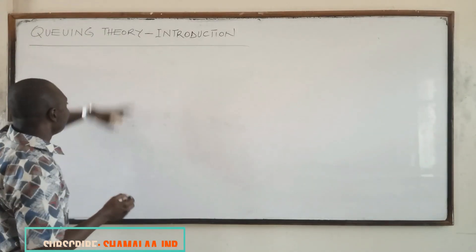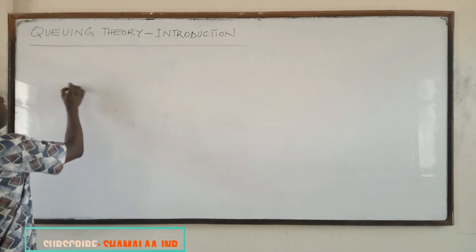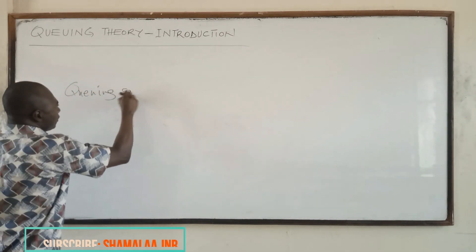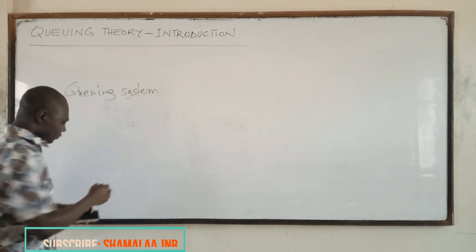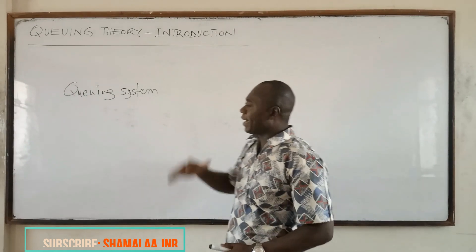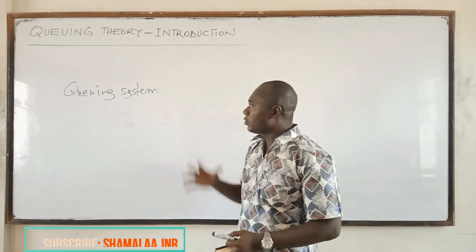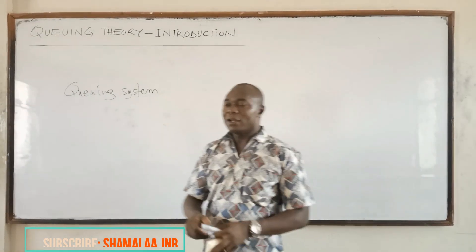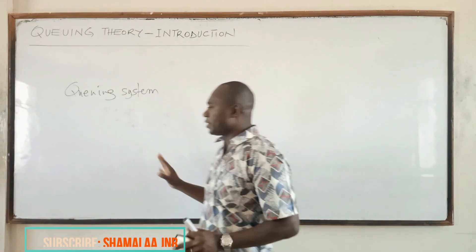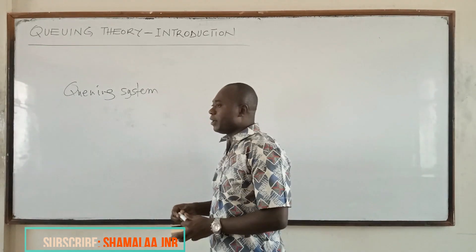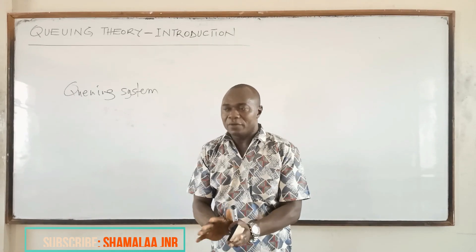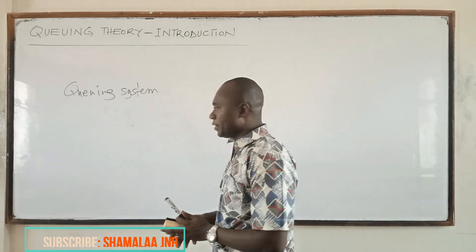Now, I have explained Queueing Theory. You also have what you call a Queueing system. A Queueing system is a set of customers, a set of services, and an order whereby customers arrive and are processed.